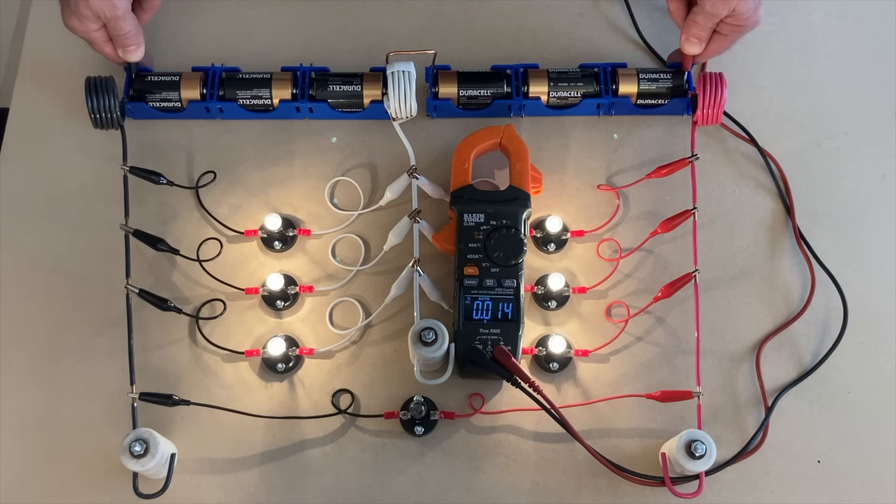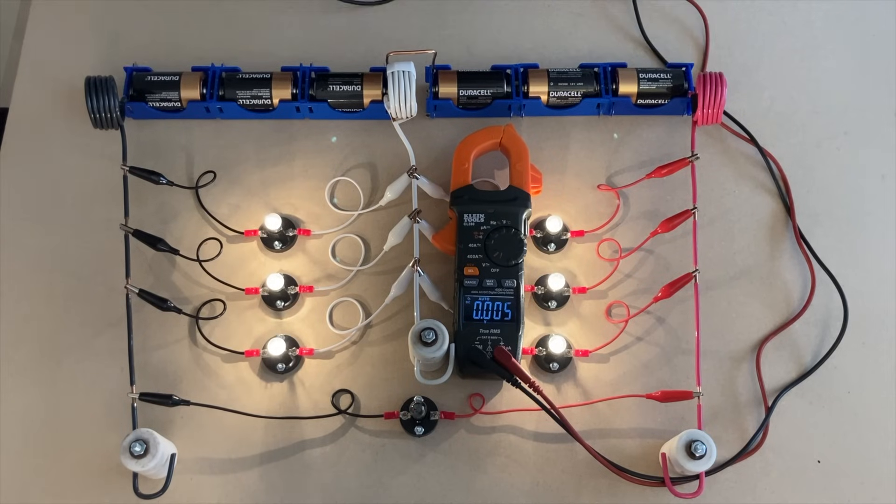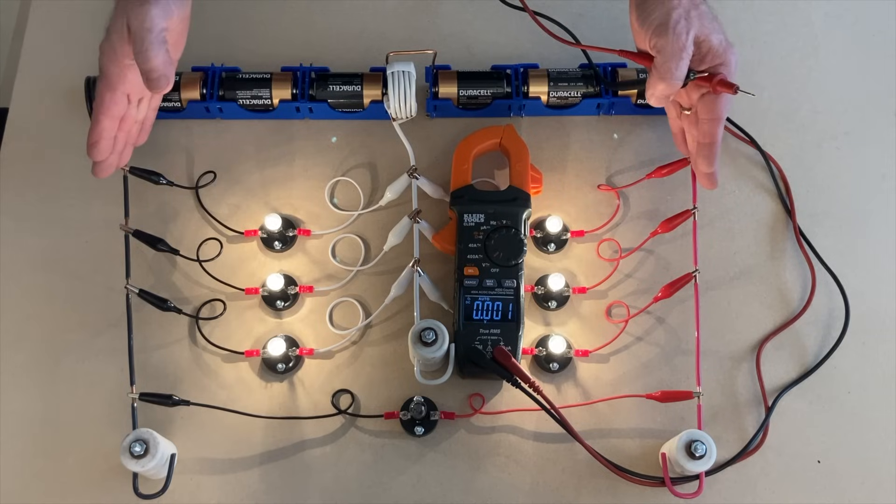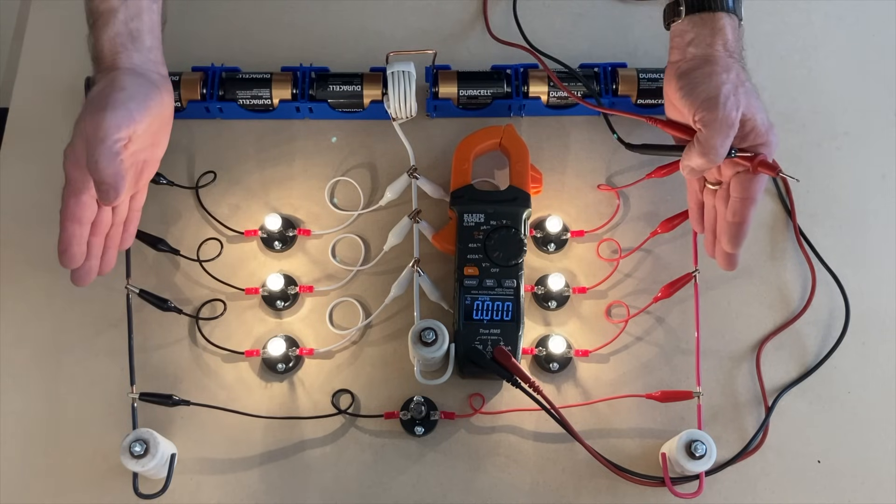So by the time I get to the red wire, there's no voltage left. Because the two banks are opposing each other, the voltages cancel each other out on the line to line measurements.